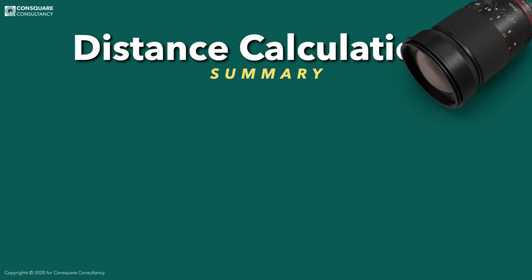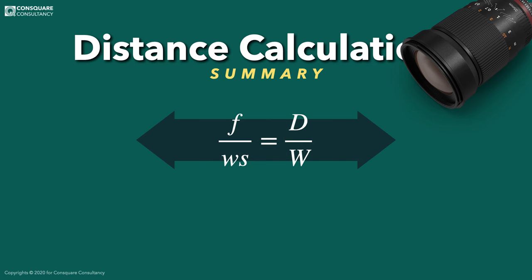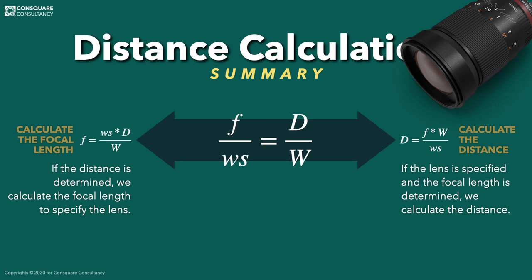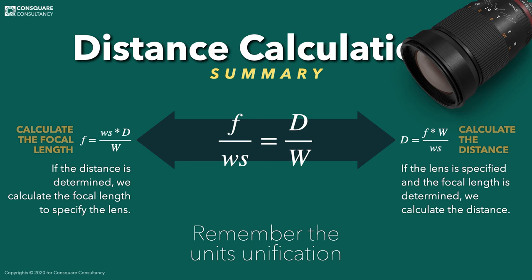Summary of formulas: The primary formula derives two variants by cross-multiplication. The left formula calculates the focal length — used when the distance is fixed and the camera position is permanent, to specify the proper lens. The right formula calculates the distance — used when the lens and focal length are specified, to decide exactly where to position the camera. Remember to unify all units to millimeters.